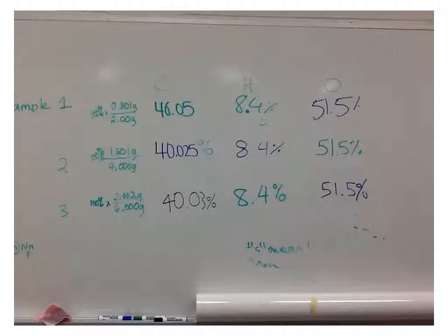So the masses, the 2 grams, the 4 grams, the 6, changed, but so did the mass of the element. So this one's carbon, right? It changed. So you should get the same percent if it's the same compound. So I think we can safely say this compound is 40% carbon, 8% hydrogen, and about 52% oxygen with respect to masses.